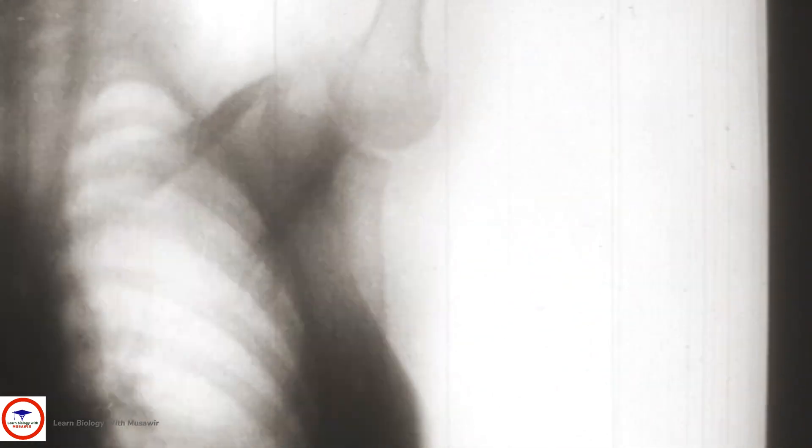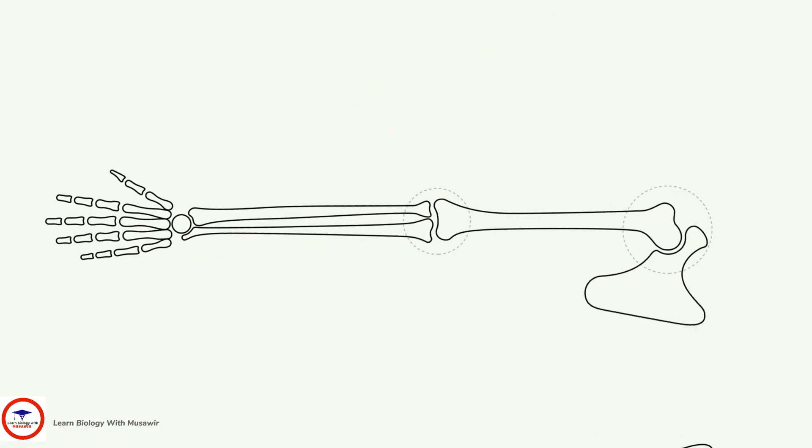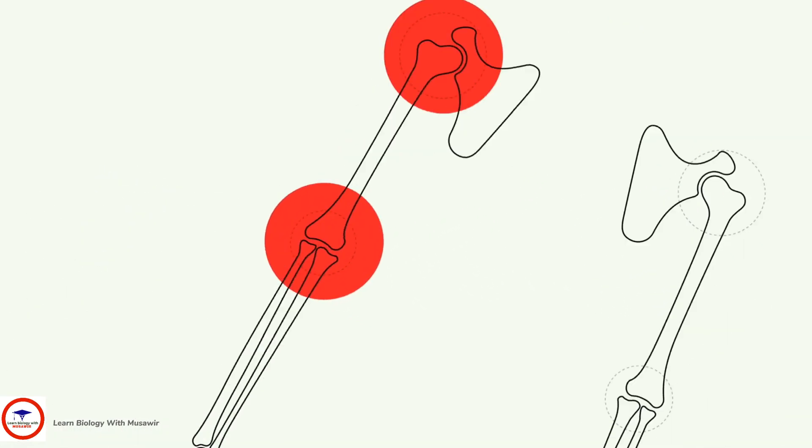RA is typically symmetrical, targeting joints on both sides of the body. Rather than affecting one arm or leg, in most cases symptoms will occur in both.